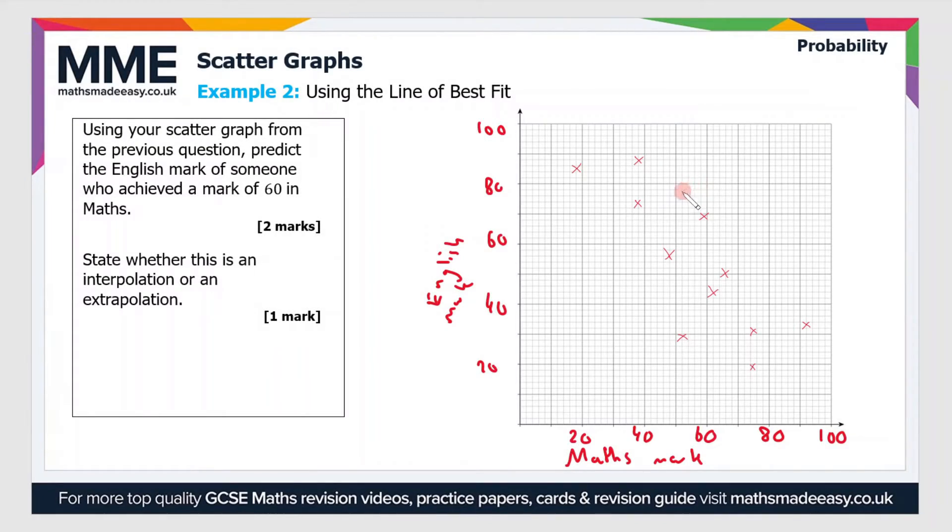Moving on to the second part of the question: using your scatter graph from the previous question, predict the English mark of someone who achieved a mark of 60 in maths. Now we're going to need to draw a line of best fit. There's 11 data points, so we need about 5 data points on each side of the line. I'm going to draw a straight line. Make sure you use a ruler if you're drawing a straight line in an exam.